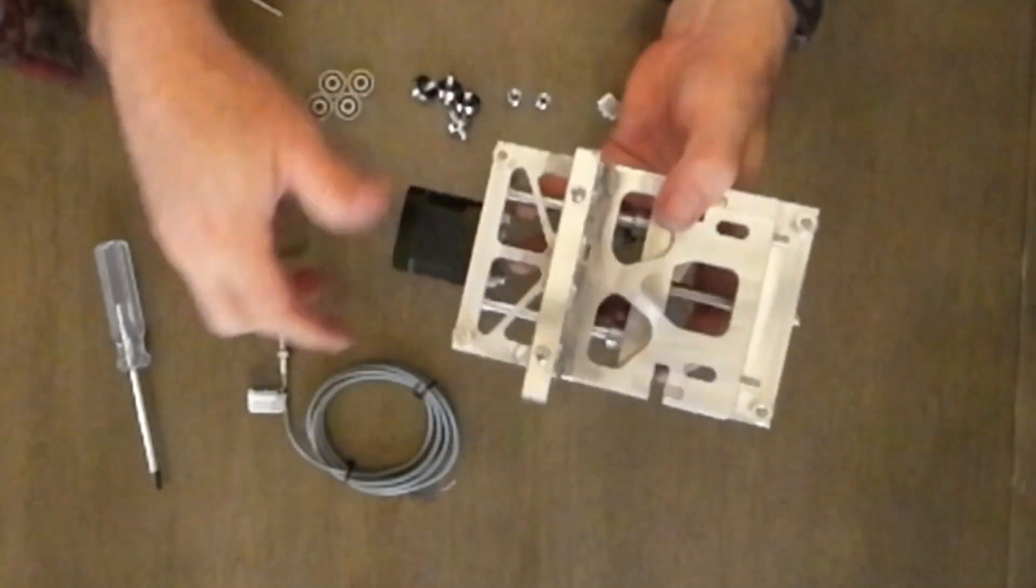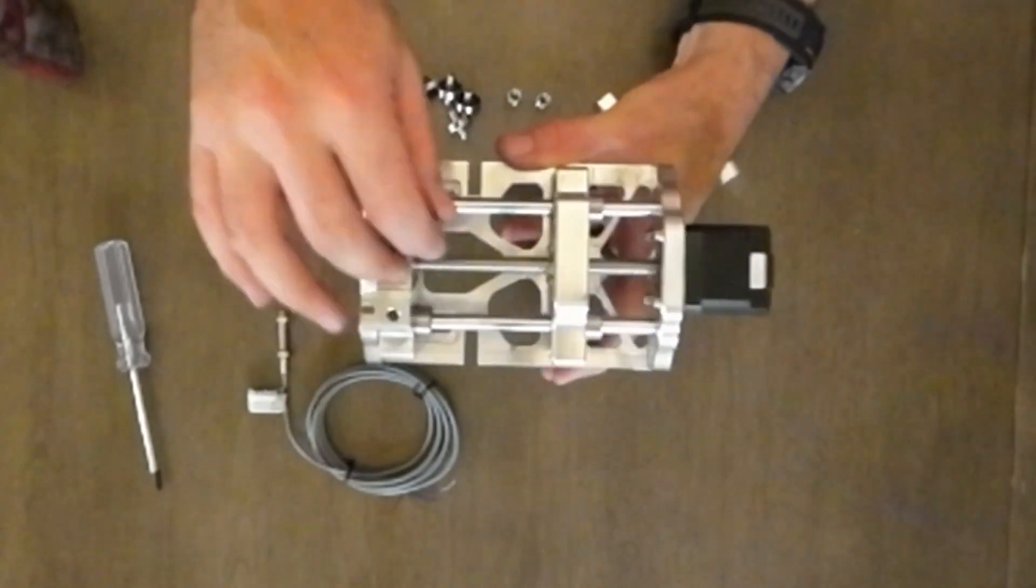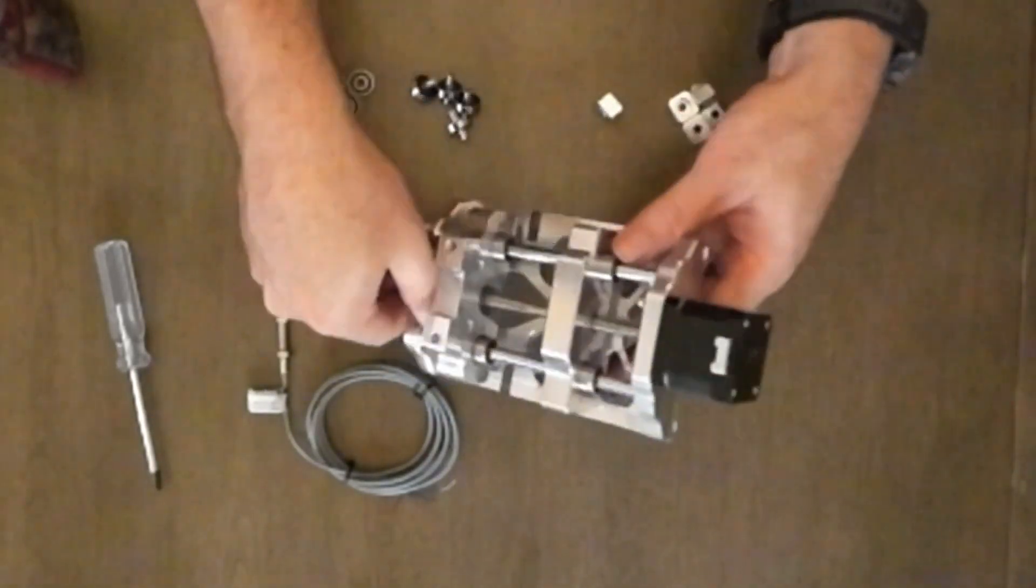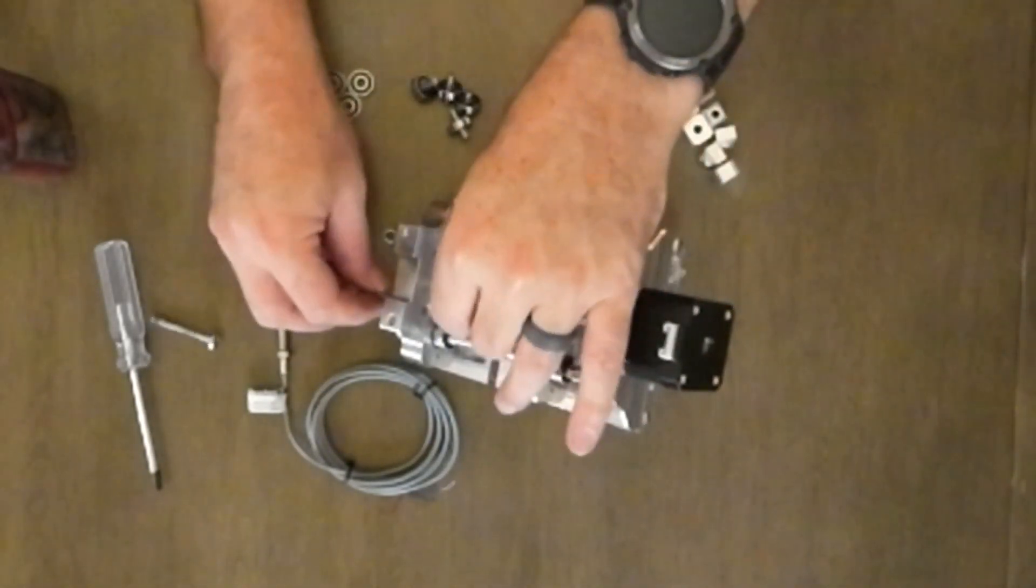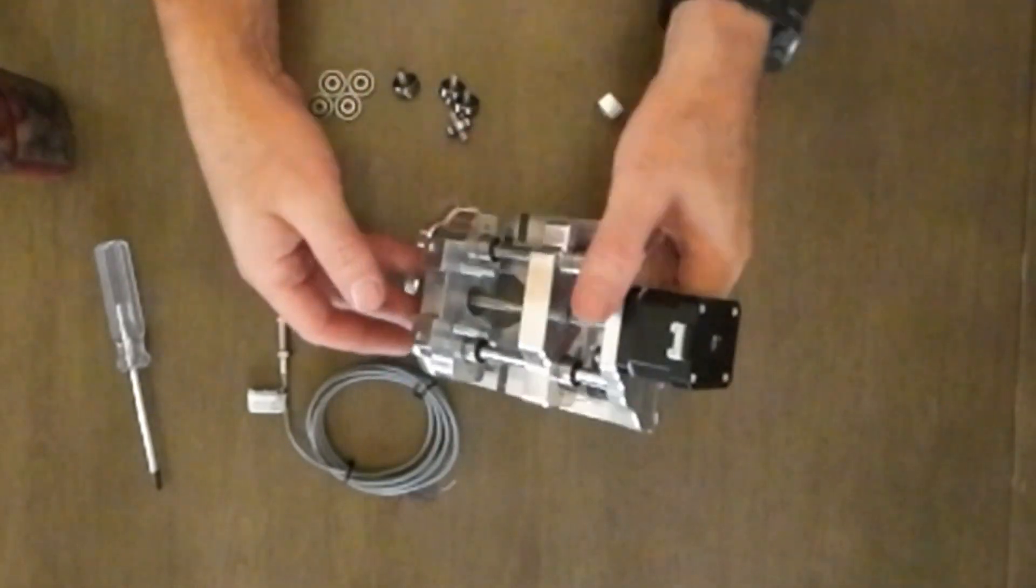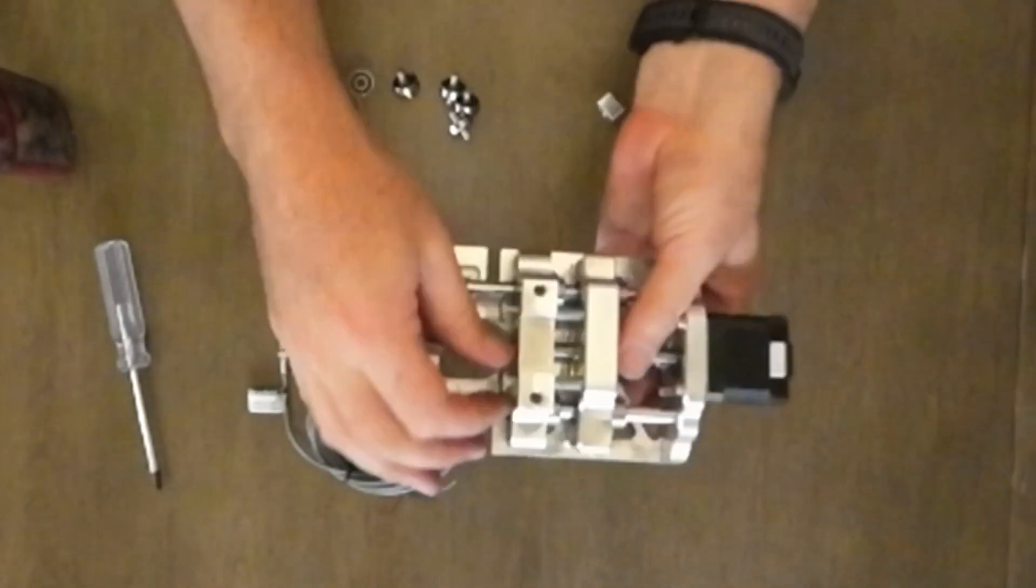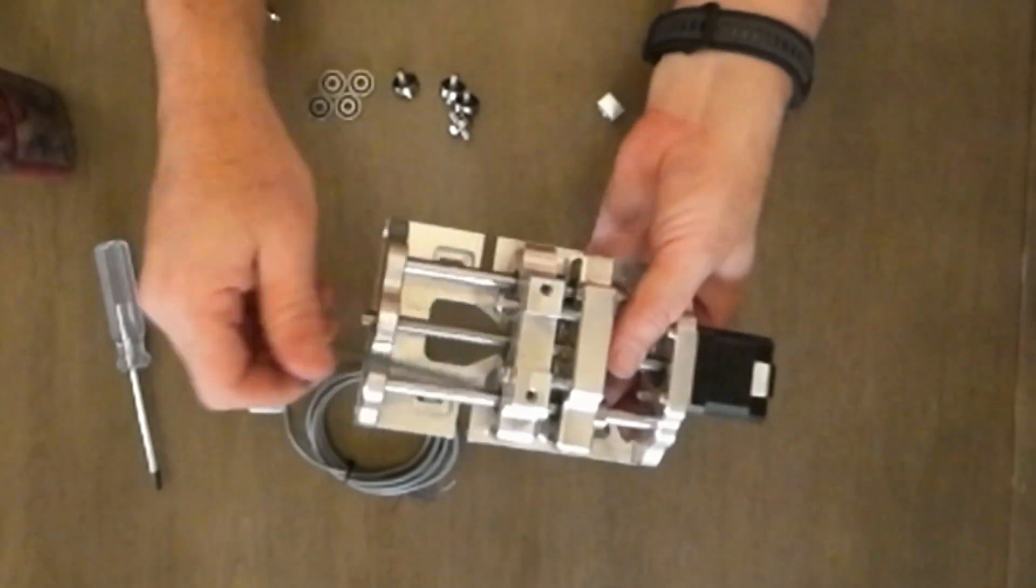And between those two is the driven block that holds the torch holder. They're connected with bolts and springs between them to allow the reading of the material height.